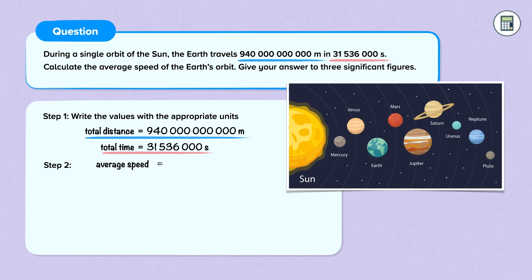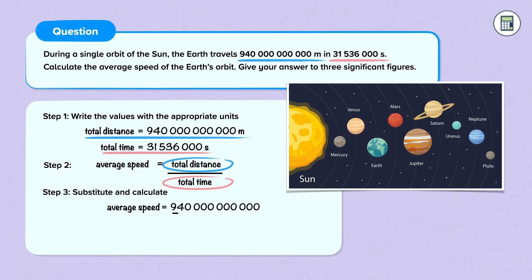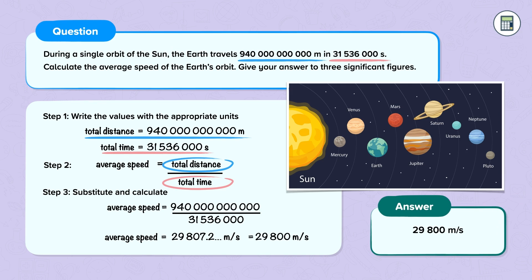Step 2: Select the correct equation. Average speed is equal to total distance divided by total time. Step 3: Substitute and calculate. Average speed is equal to 940 billion divided by 31,536,000 seconds. Therefore, average speed is equal to 29,807.2 metres per second. This is 29,800 metres per second to three significant figures.